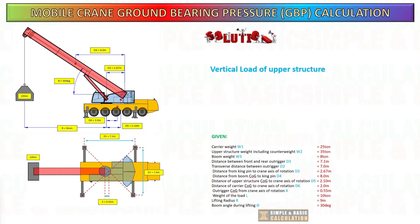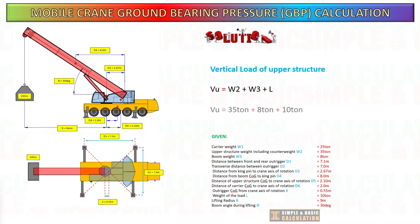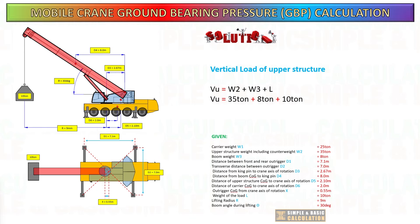Next, calculate the vertical load of the upper structure. To get this, add the weight of the upper structure, the boom weight, and the weight of the load.